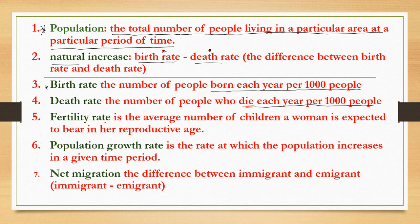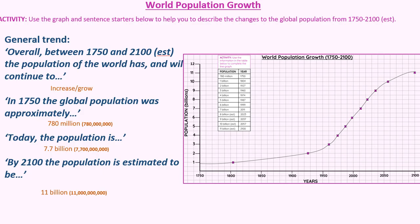Fertility rate is the average number of children a woman is expected to bear in her reproductive age. Population growth rate is the rate at which the population increases in a given time period. Net migration is the difference between immigrants and emigrants in a particular country.